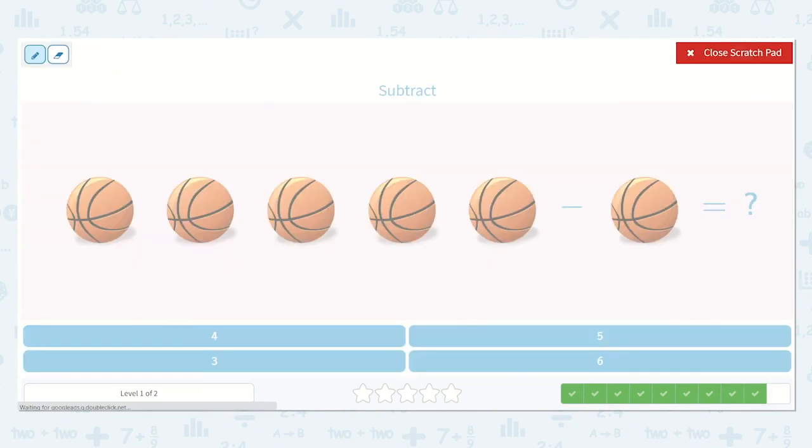Okay, here's our last problem. We have 1, 2, 3, 4, 5 basketballs. And they want us to take away 1 of them. Do you remember what we can do when we're taking away 1? We can count back. Just 1 number.